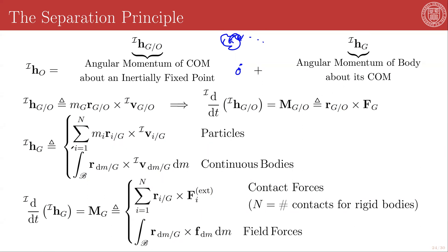H sub G for a collection of particles is defined as the summation over all positions of each particle crossed with their linear momentum; for continuous bodies, you take the limit and turn this into an integral. The derivative of H sub G equals the external torque about G, though this gets tricky because the external torque differs depending on whether you have contact forces, field forces, or both.